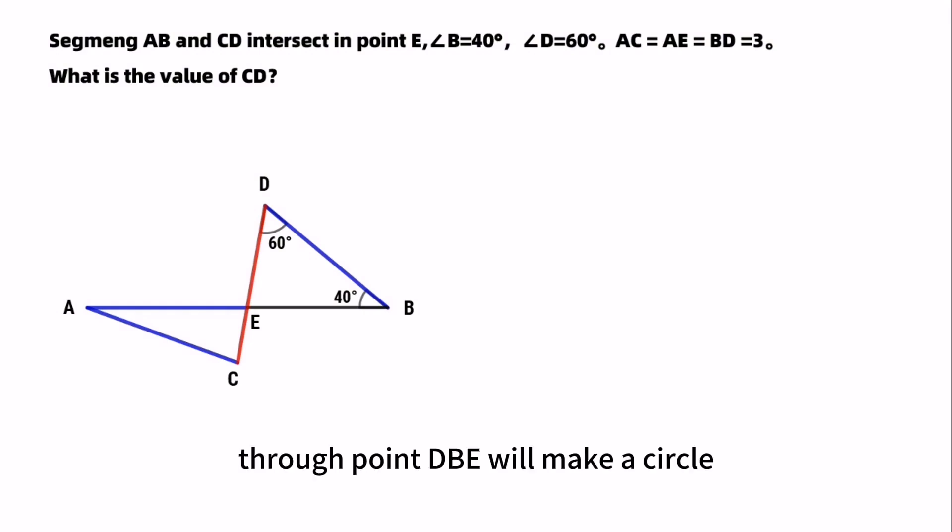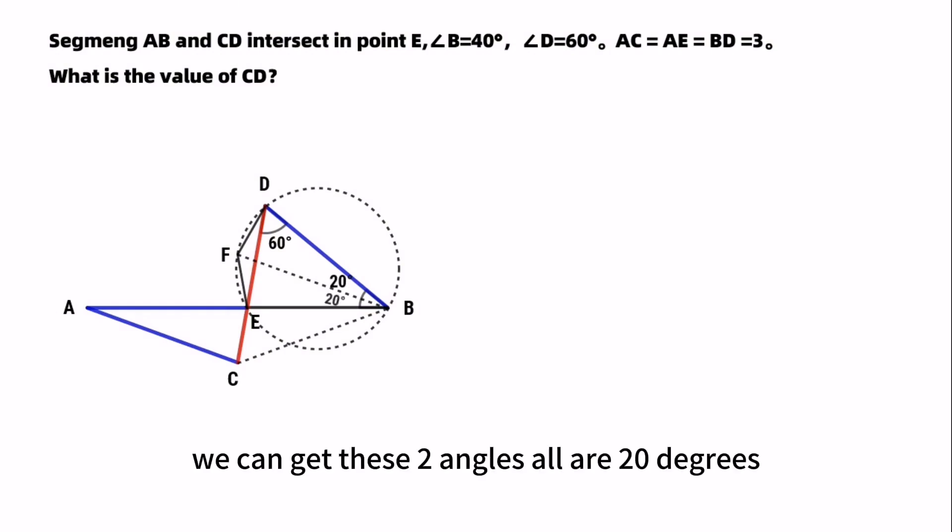Through point D, B, E, we make a circle and make a bisector over angle B. If BF intersects the circle in point F, then connect FD and FE. Also connect CB. We can get these two angles, all are 20 degrees.